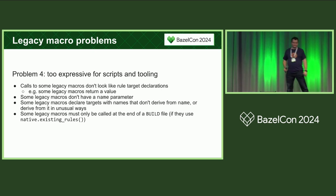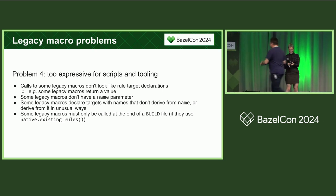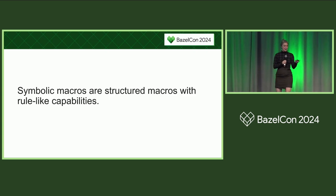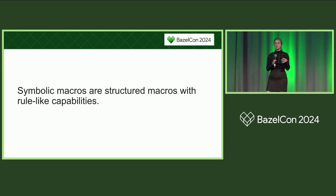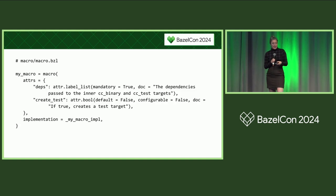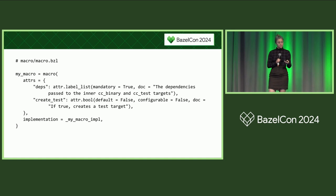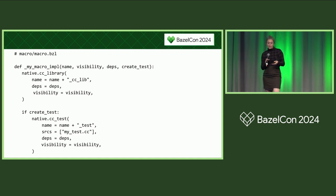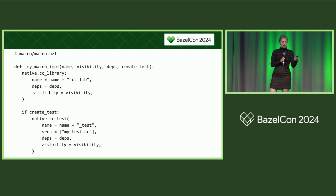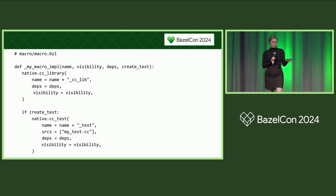So what's the solution? The solution, as you might have expected, is symbolic macros. If a legacy macro is an unstructured function, a symbolic macro is a structured function that has certain rule-like capabilities. Defining a symbolic macro is much like defining a rule — the macro call takes a set of typed attributes and an implementation function. If you're thinking about migrating a legacy macro to a symbolic macro, this implementation function might be what your macro looks like today — it's a private function, but otherwise pretty much the same as what you might expect.